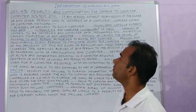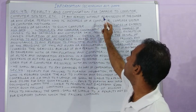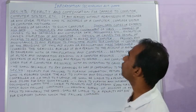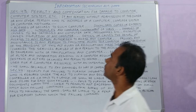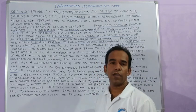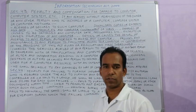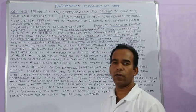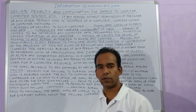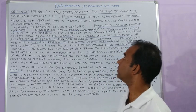Section 43: Penalty and Compensation for Damage to Computer, Computer System, etc. If anyone causes damage to our computer system — for example, by introducing a virus into our computer network or system — this section deals with that.